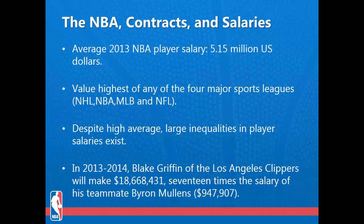As a brief description of vocabulary, a contract is, on a basic level, a legal agreement between a player and a team, in which the team guarantees a player a set amount of money to play for a set amount of years. Salary is the promised amount of money a player earns for a given year, as stipulated in his contract. In 2013, the average NBA player's salary stood at US$5.15 million, which is the highest of the four American major sports leagues.